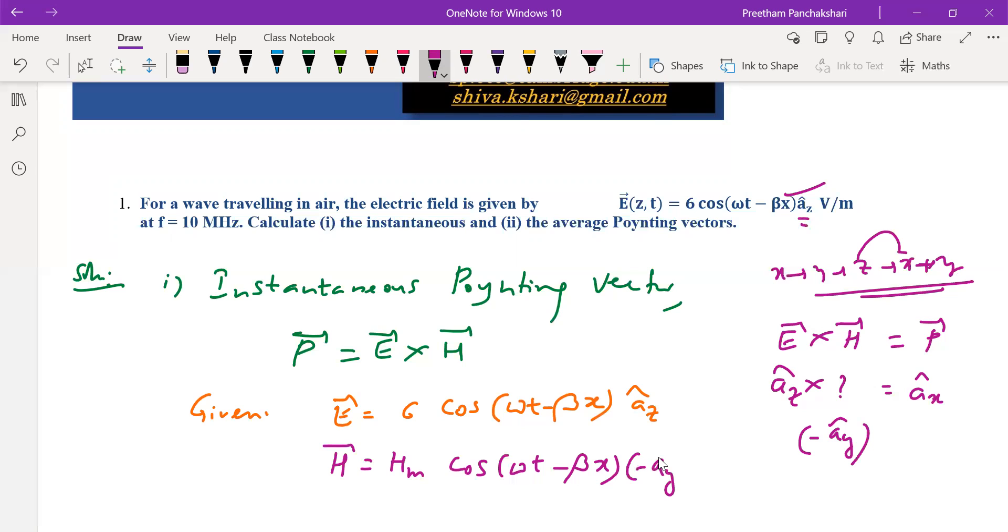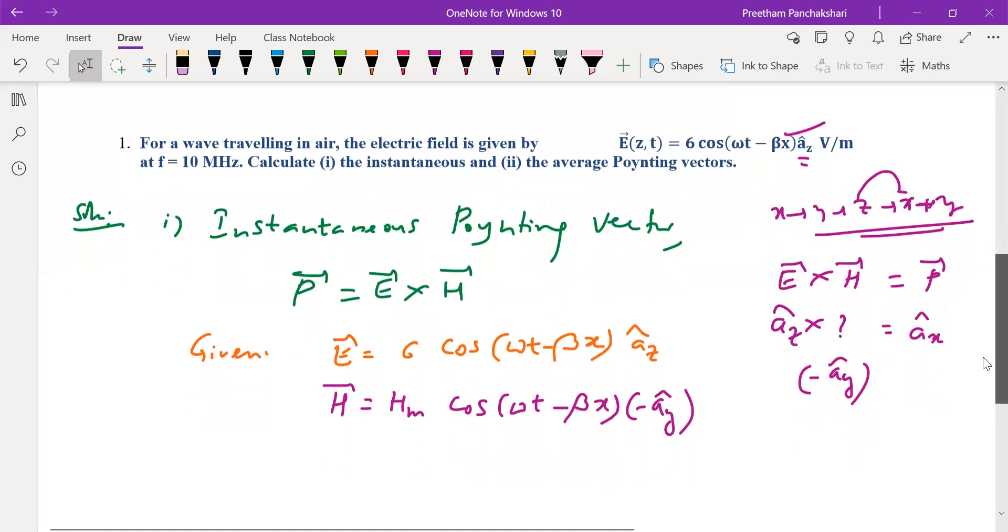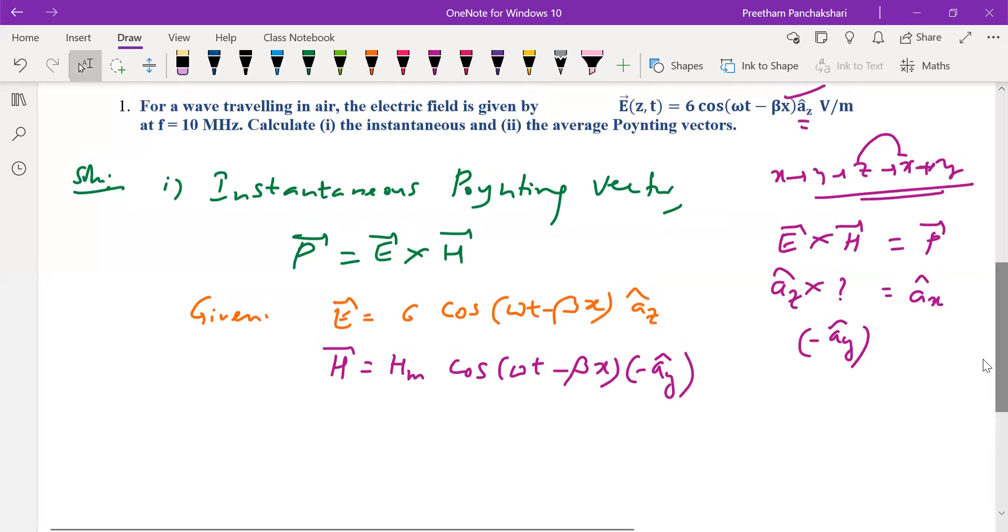We are going to have minus y from this equation. So â_z cross minus â_y is x.